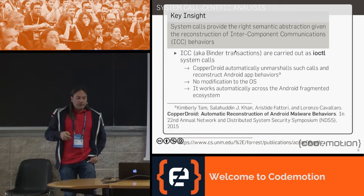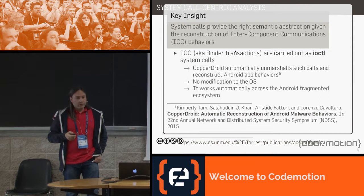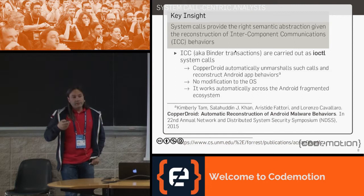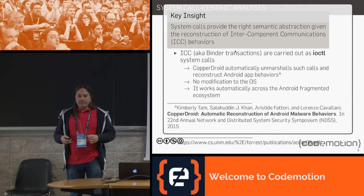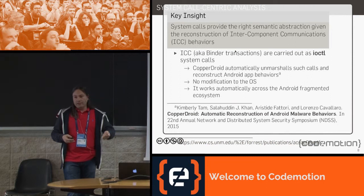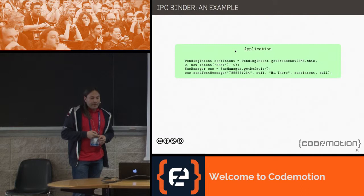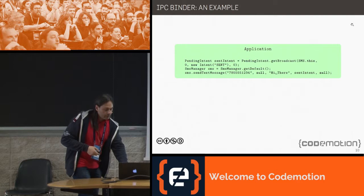That system call is IOCTL — input/output control — normally used to communicate with devices. Binder is implemented in the kernel and supports a user-space device /dev/binder. By opening the device and performing IOCTL queries, you perform Binder transactions. Let's see an example — here is a very simplistic application that sends a text message.